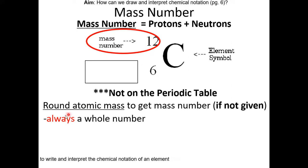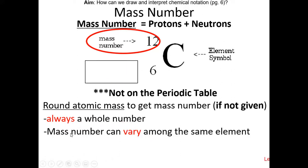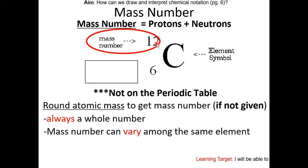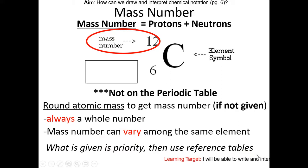The mass number is always a whole number — you're never going to get a decimal. Atomic mass is a decimal; mass number is always a whole number. Mass number can vary among the same elements: carbon can be 12, 13, or 14, for example. Whenever you come across these questions, use what is given first as a priority. If you have no other information, then use the reference table.